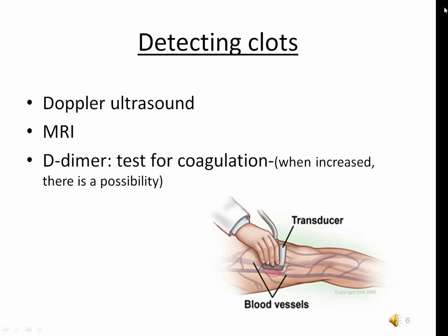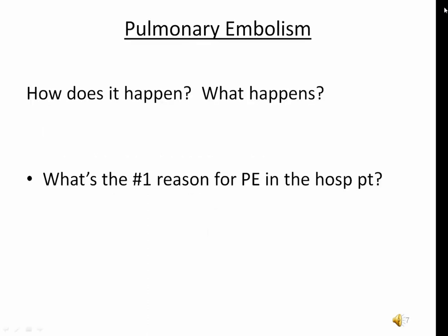When patients exhibit signs and symptoms of clot formation, imaging can help. The patient will go to the radiology department for a Doppler ultrasound of the affected area, and in some cases an MRI or CT scan can provide a closer look. A pulmonary embolism occurs when a blood clot travels through the pulmonary artery and lodges somewhere in the vasculature of the lungs. The pulmonary artery carries blood from the right ventricle to the lungs.